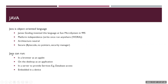So what all can Java do? Java can run in a browser as an applet. It can run on your desktop as an application. It can run on your server, and it can be embedded on a device.